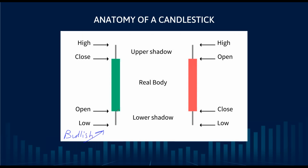The bullish candlestick starts off with the open here, and then it closes higher. It's bullish because price has closed higher than when it first started for that session. If we're on the daily chart, one candlestick represents one day — one session. On a four-hour chart, one candlestick represents four hours. The bullish candlestick shows that price opened at the low, fluctuated throughout the day, and finally landed at the close up higher. The space between the open and the close forms what we call the real body.